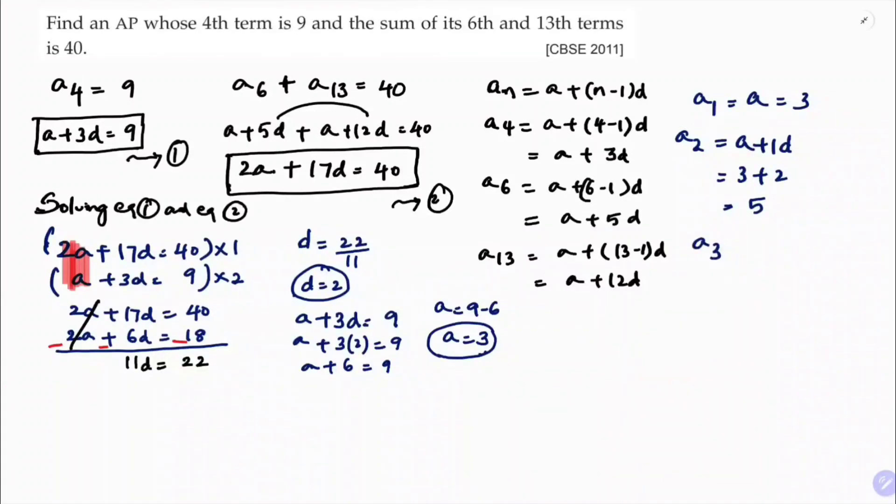And A3, A3 is A plus 2 times D. 3 plus 2 times 2, that is 3 plus 4, which is 7. Therefore, the AP is here. First term is 3, second term 5, 7 and so on. This is the arithmetic progression whose fourth term is 9 and sum of its sixth and thirteenth term is 40.